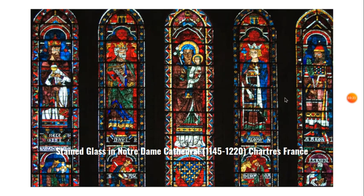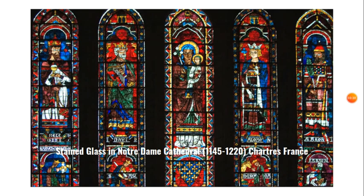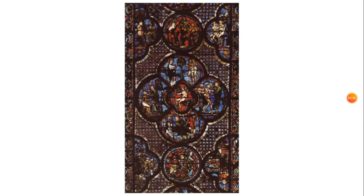These are some art examples that I would show students. This one is basically telling the story of baby Jesus and also shows different kings and the importance of different people in that story. It's from stained glass in Chartres, France. And here's a quatrefoil — you can see that there are different stories within the glass here.